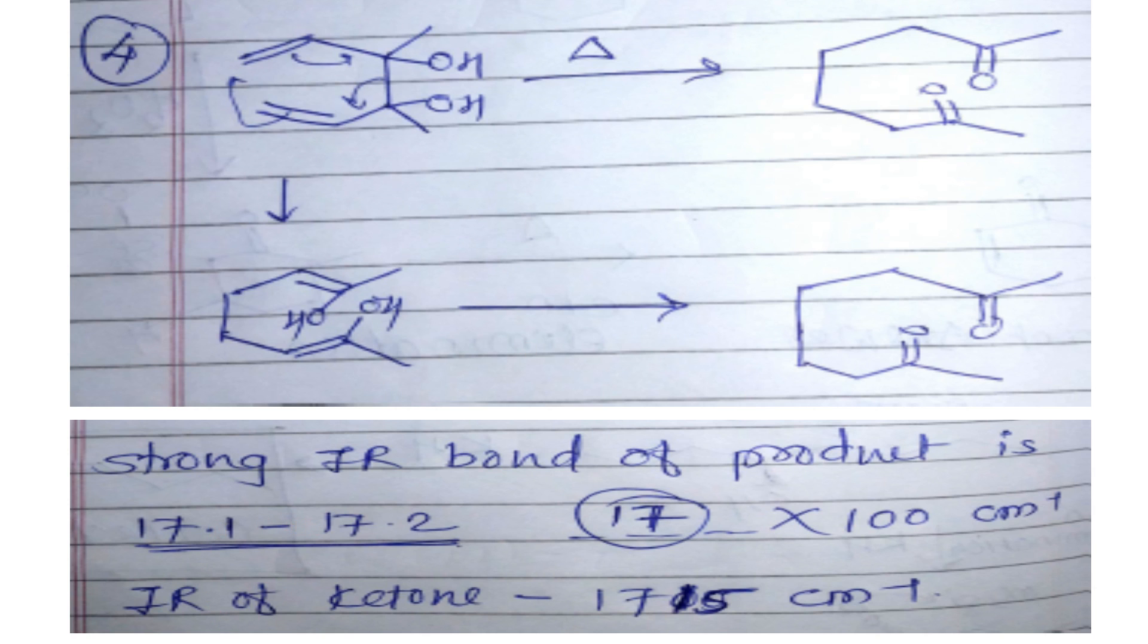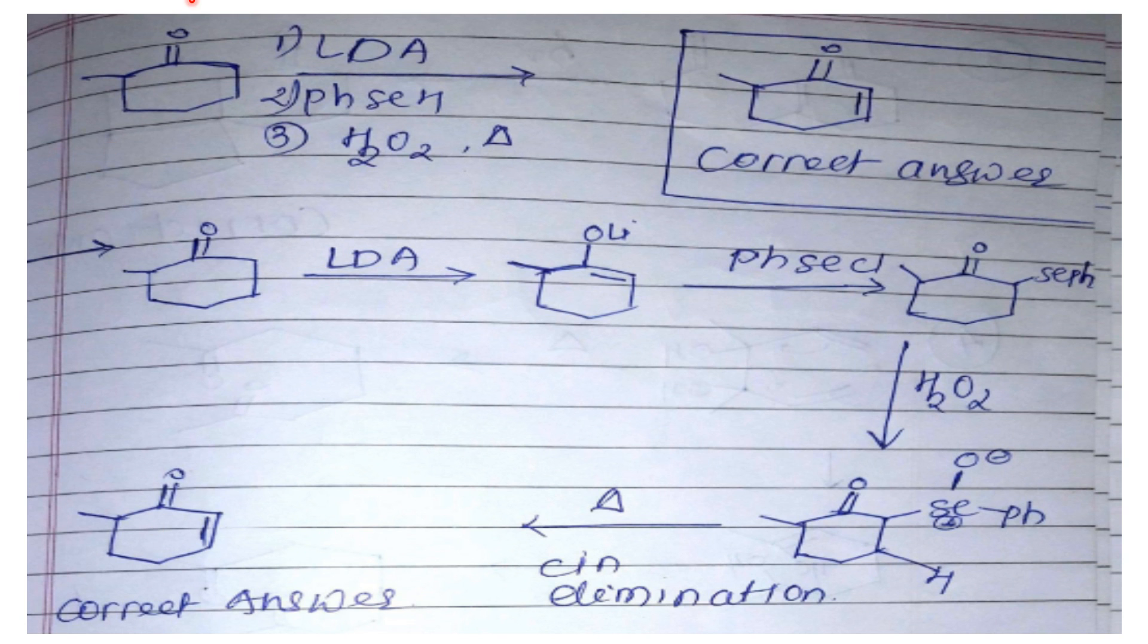Now we will see another where on this cyclohexanone, LDA and phenyl selenyl chloride—yes, sorry, here one mistake is there—then H₂O₂ and thermal condition. We know that in presence of LDA this keto will be enolized, and after this, lithium enolate.